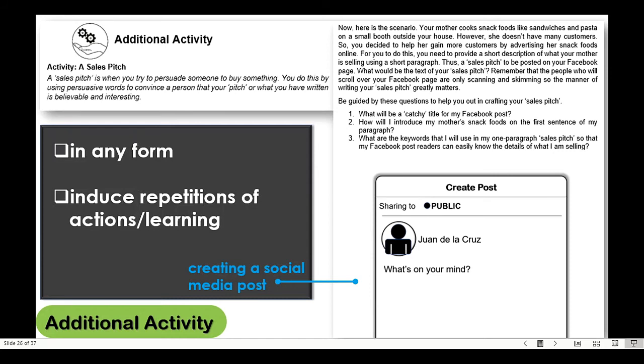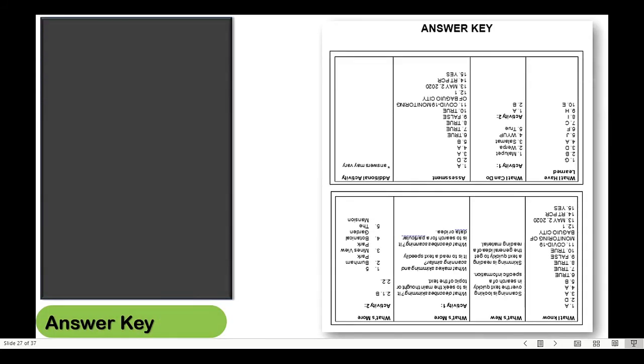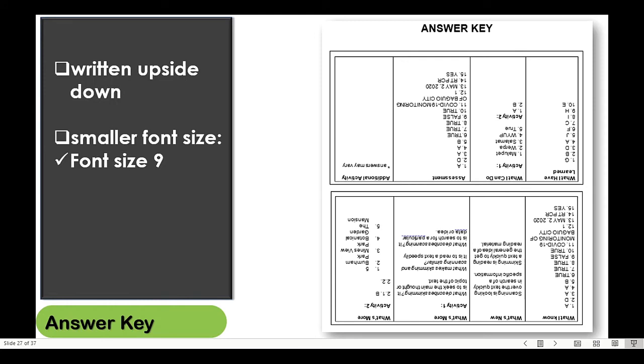After the main body pages for the learning process, a dedicated page for the answer key of all the given activities follows. Observe that your answer key should be written upside down using smaller font size, preferably 9 points. You might ask, why is an answer key part of the learning module? Wouldn't the learner jump immediately to the answer key without studying the module from the start?